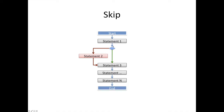You can use the if statement to do what I call a skip: you're executing some statement, you get to a condition, evaluate it, and if it's true you do statement 2 then statement 3. But if it's false, you skip statement 2 and go straight to 3. An example: if your program asks for a person's age and the person is under age, you need to collect information about their parent first. However, if they're old enough, you skip asking about the parent and continue collecting their information.